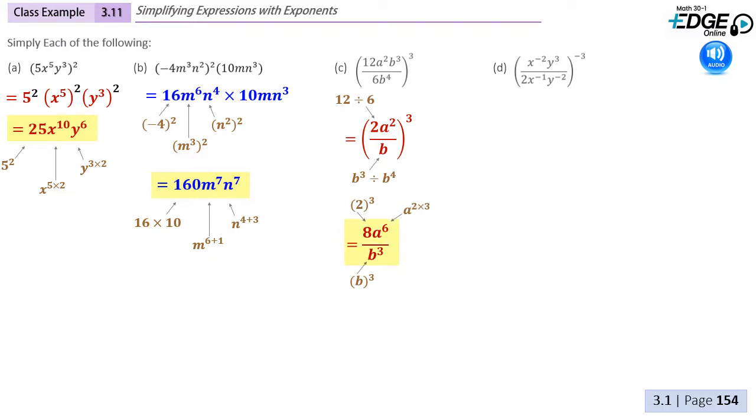In our third example, note that we are simplifying the argument inside of the bracket before applying the power of 3. 12 divided by 6 is 2, because this is like 2 over 1, the 2 remains in the numerator. The a squared was not cancelled out by any other factor of a.